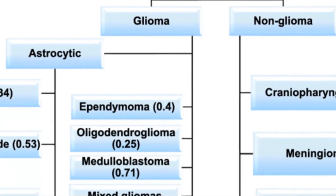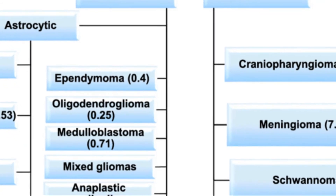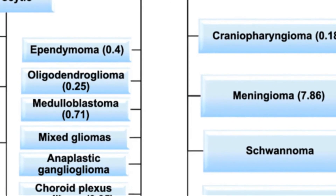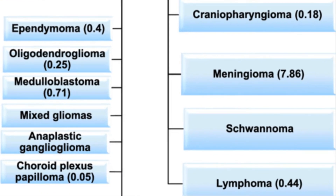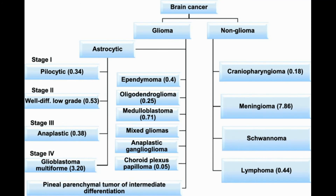The non-gliomas are craniopharyngiomas, meningiomas, schwannomas, and lymphomas — because lymphomas originate from lymphocytic cells. Craniopharyngiomas arise from the pituitary and surrounding area, meningiomas from the meninges, and schwannomas from the nerve cells — they are neuromas. So the cells of the CNS that originate from glial tissue produce the glioma tumours.